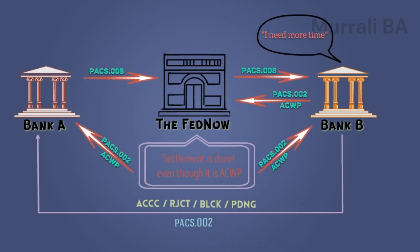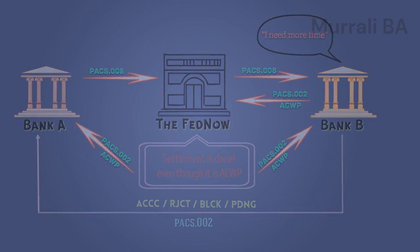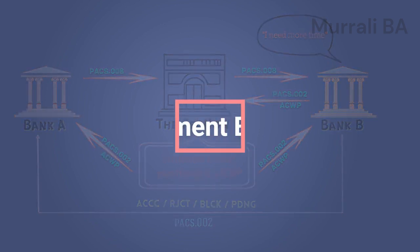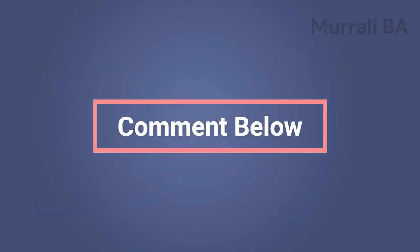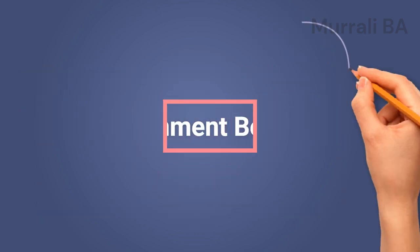The FedNow service will forward these messages to Bank A. In case the final status is RJCT, they would need to send a PACS payment return message. Now here is a question for you all — why do they have to send the payment return? Please comment your understanding.